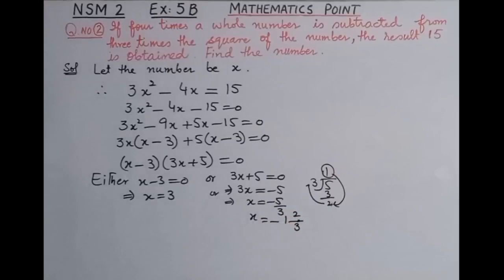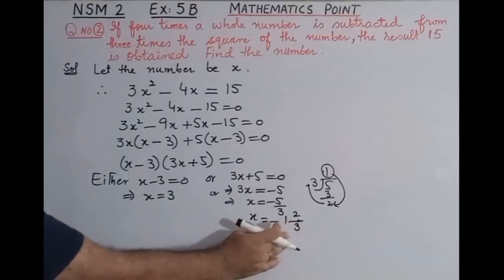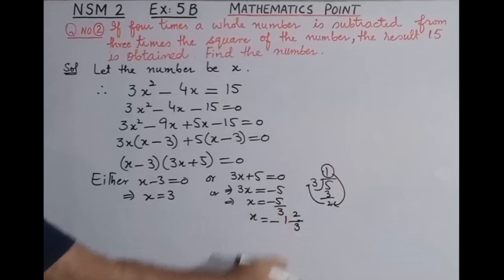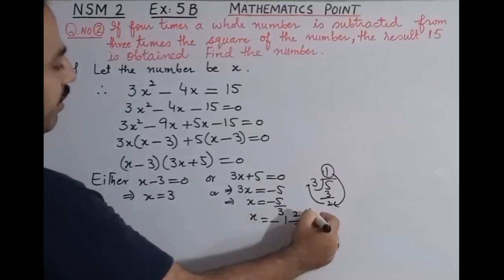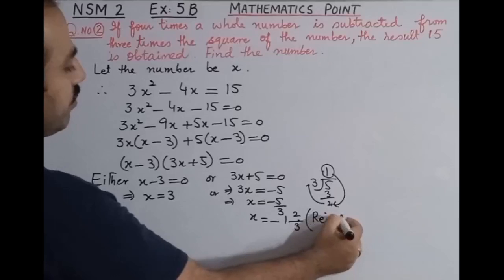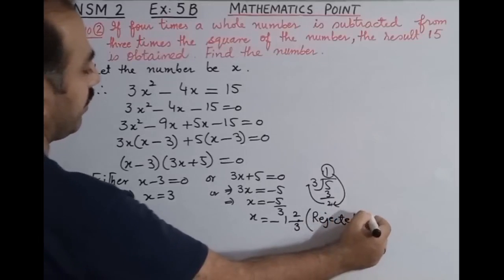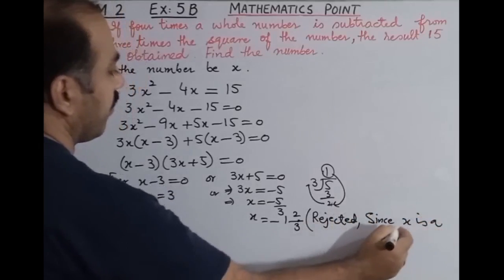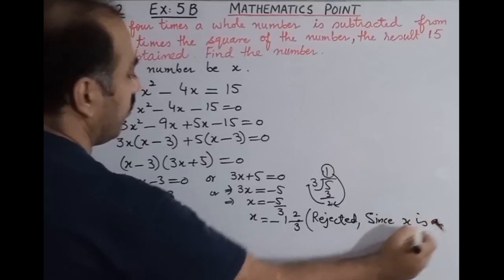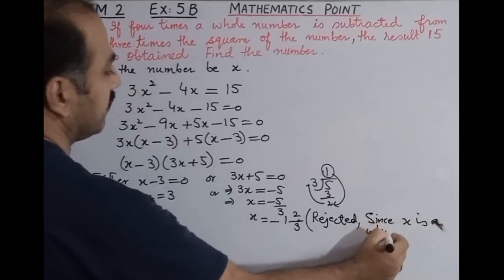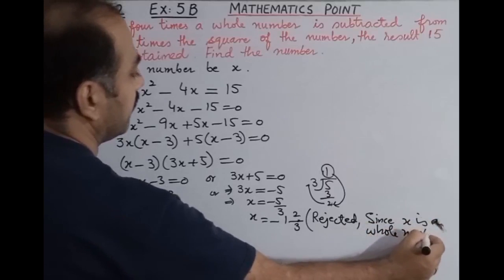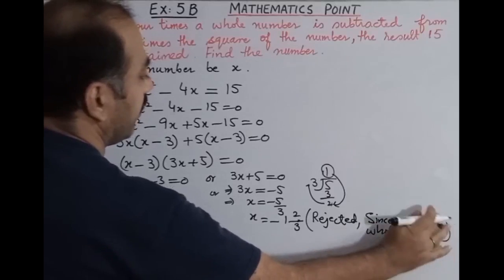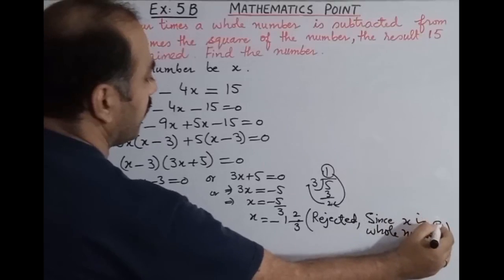Now, we had to find a whole number. Students, is -1⅔ a whole number? No, it is not. So we write: since x is a whole number, x = -1⅔ is rejected. This value is not accepted.